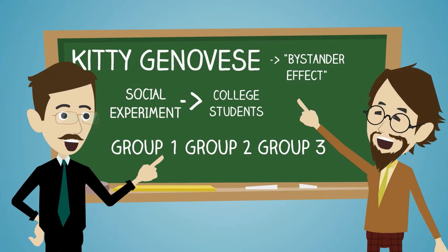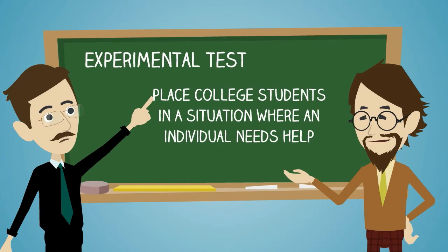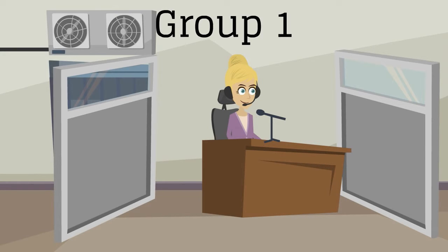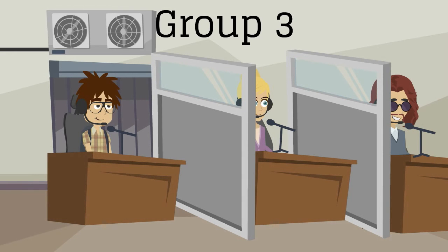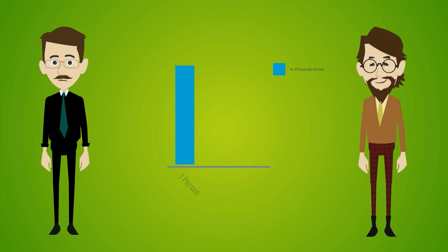This case caught the attention of psychologists John Darley and Bibb Latané. They both came up with an experiment to test what they coined the bystander effect. They recruited college students into social experiments where they were placed into one of three groups talking to an individual who needs help. In group one, one student was placed in a room alone talking to another student they couldn't see who needed help. In group two, two students were placed in a separate room in a similar situation. In group three, three students were placed into a similar situation. John and Bibb measured how often the college students got help for the individual in need, and found that as the group of individuals increased, the chance of the victim receiving help decreases.